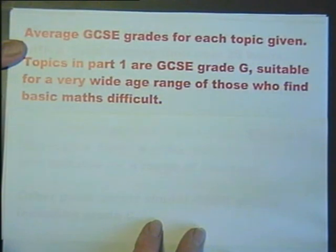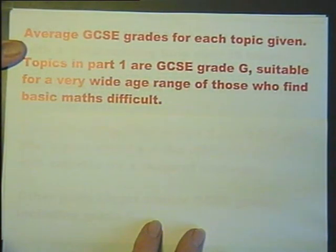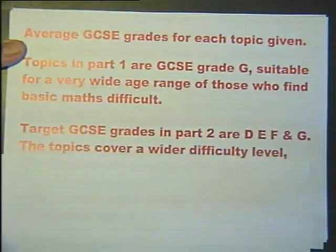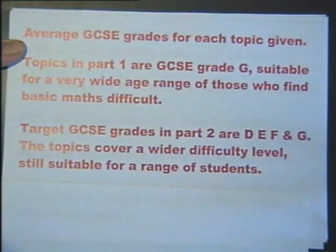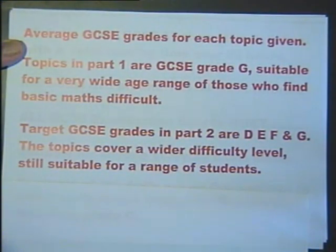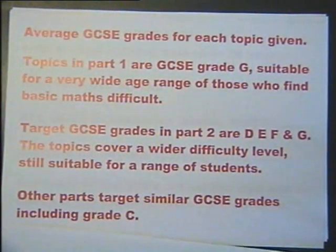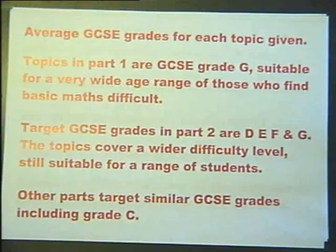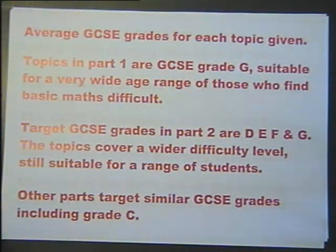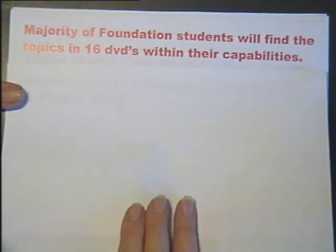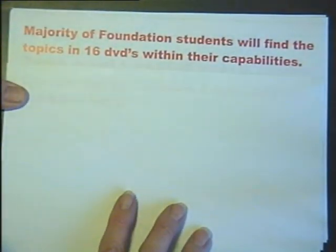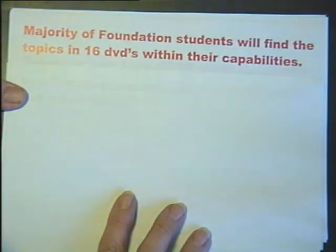The topics in Part 1 are GCSE grade G, so possibly suitable for a very wide range of those finding basic mathematics difficult. The target grades in Part 2 are D, E, F and G, so the topics cover a wider difficulty range but are still suitable for a wide range of students. Other parts cover similar GCSE grades including GCSE grade C. The majority of students sitting GCSE at Foundation level will find the topics covered in the series of DVDs within their capabilities.